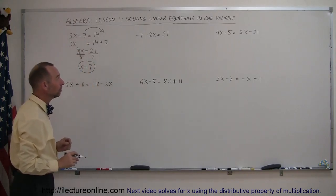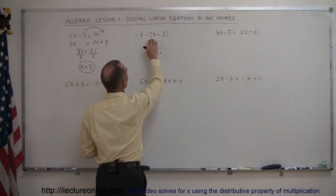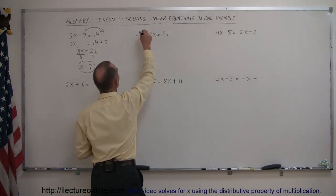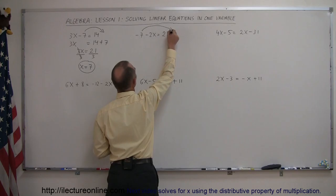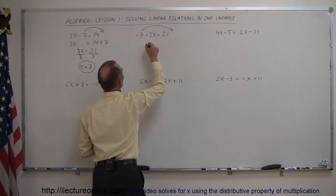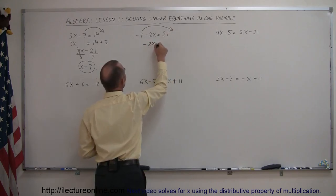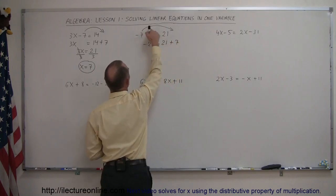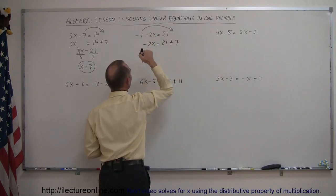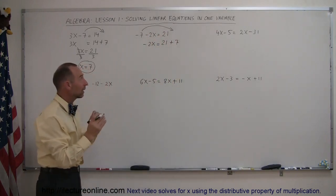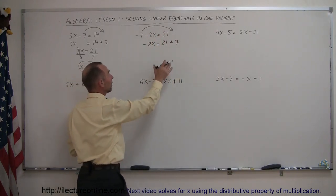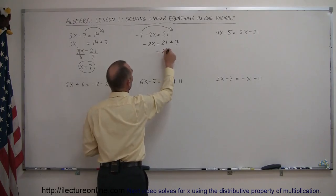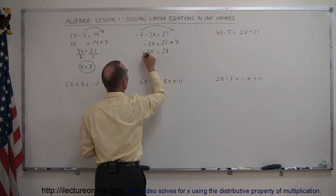Our next example: do the same thing — all terms that have an x stay on the left, any terms that do not have an x go to the right. So this becomes minus 2x equals 21 plus 7. Remember, when we cross the equal sign the sign changes. Now we combine like terms on both sides: 21 plus 7 equals 28, so we have minus 2x equals 28.